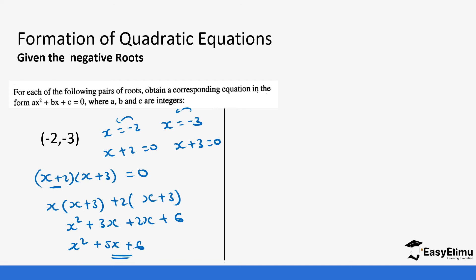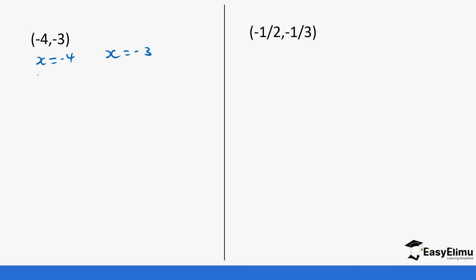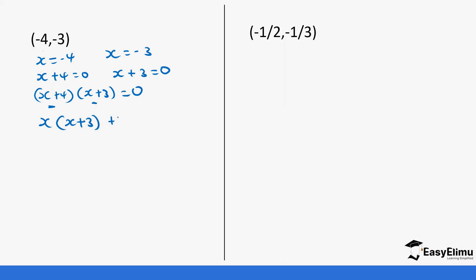Let's do a few more questions. We have roots -4 and -3, which tells us x = -4 and x = -3. This is the same as x + 4 = 0 and x + 3 = 0, so we multiply: (x + 4)(x + 3) = 0. Expanding: x(x + 3) + 4(x + 3) gives x² + 3x + 4x + 12, which equals x² + 7x + 12 = 0.